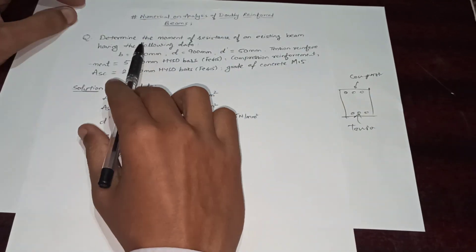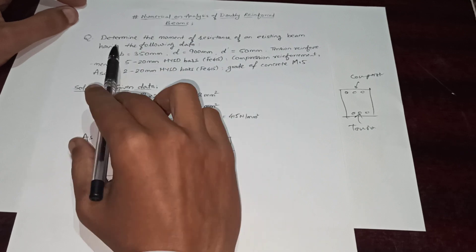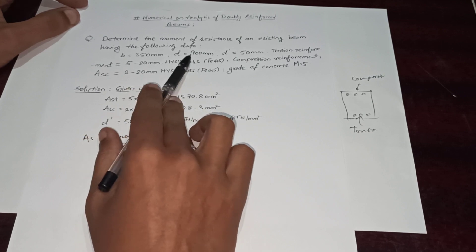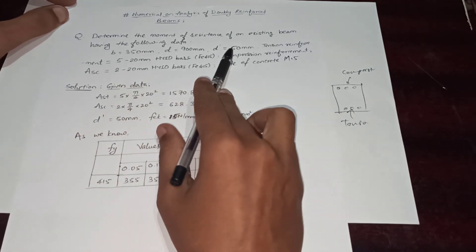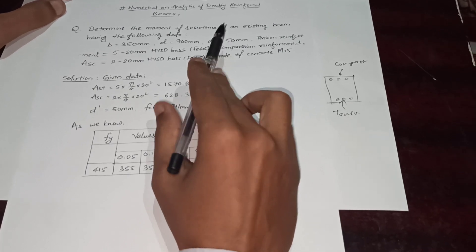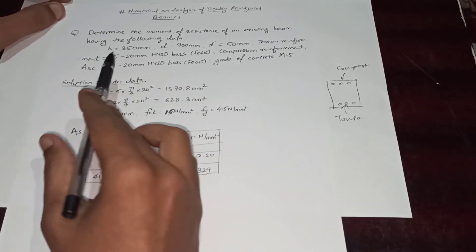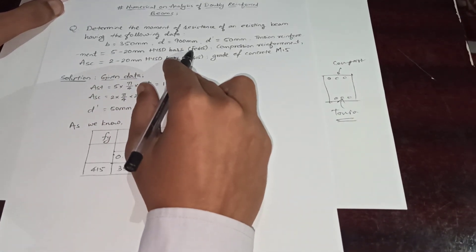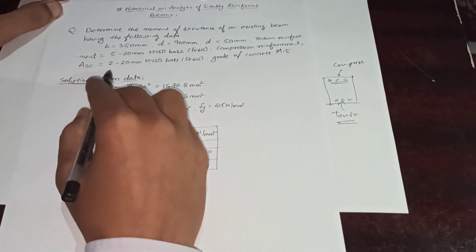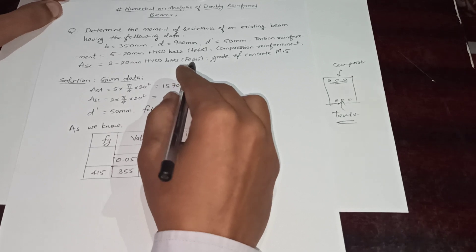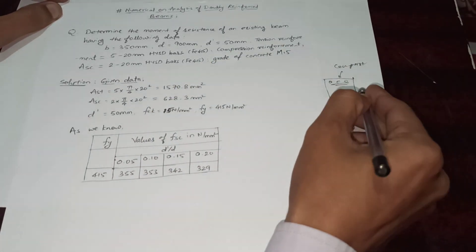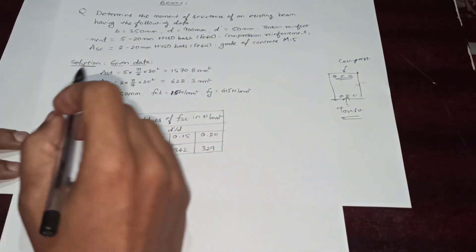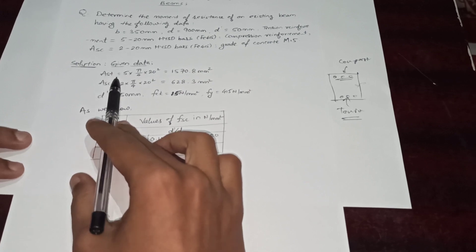Now let's see the numerical on analysis of a double reinforced beam. Determine the moment of resistance of an existing beam having the following data: width of section = 350 mm, effective depth = 900 mm, and effective cover = 50 mm on both compression and tension sides. Tension reinforcement AST is five bars of 20 mm dia HYSD, and compression reinforcement is two bars of 20 mm dia HYSD, Fe415. Grade of concrete is M15.